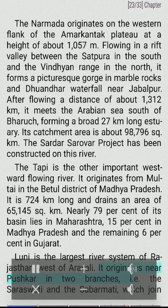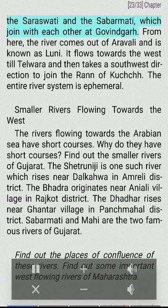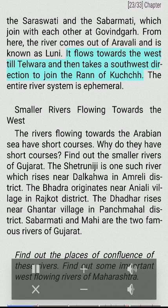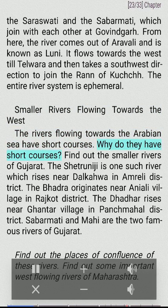Luni is the largest river system of Rajasthan, west of the Aravali. It originates near Pushkar and two branches — the Saraswati and the Sabarmati — join each other at Govindgarh. From here the river comes out of the Aravali and is known as Luni. It flows towards the west till Telwara and then takes a southwest direction to join the Rann of Kutch. The entire river system is ephemeral. The rivers flowing towards the Arabian Sea have short courses because the Western Ghats are close to the coast.